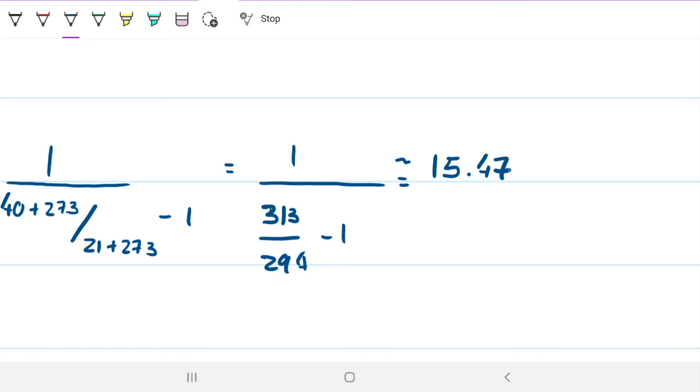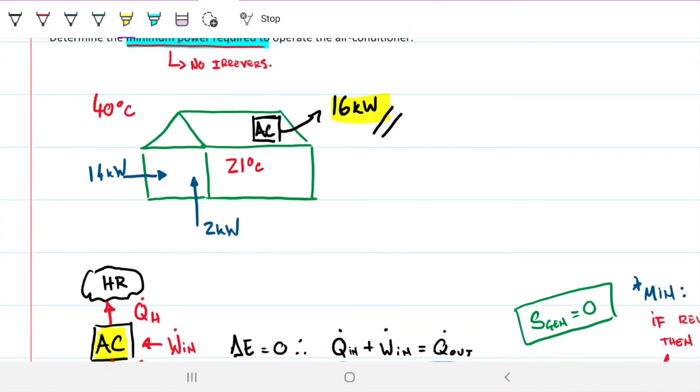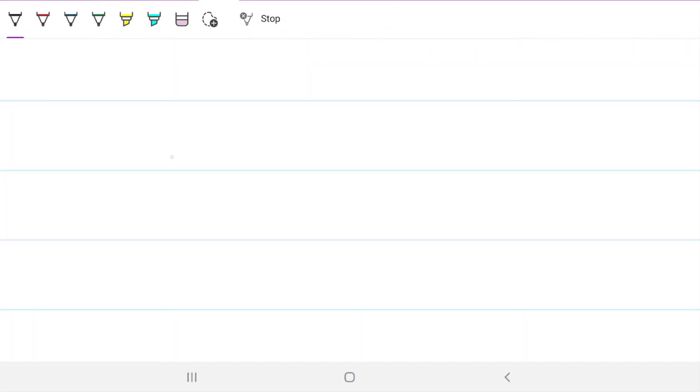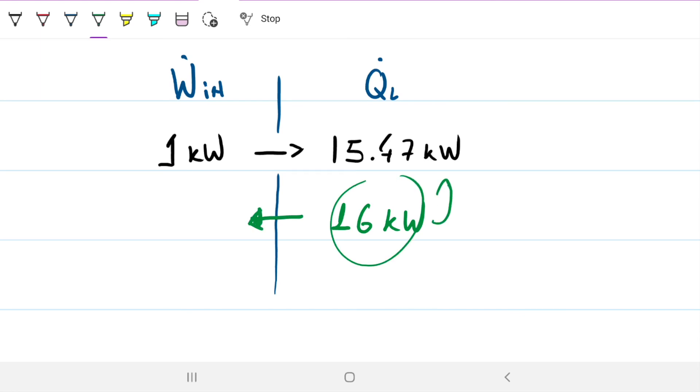And there's no units here because this is the coefficient of performance, the efficiency of it. So what this is saying is that for every 1 kilowatt that I put into this AC, it's going to remove 15.47 kilowatts from my home. So remember that we want 16 kilowatts. So that's actually pretty close to 15.47. So we need to put about 1 kilowatt, a bit more than 1 kilowatt, to make this happen. So for every energy in that I put in here, I'm going to get this Q_L. And if I want to remove 16 kilowatts, what do I need here? Well, I just need to take 16 divided by the 15.47. And that gives me 1.03 kilowatts. That is our answer.